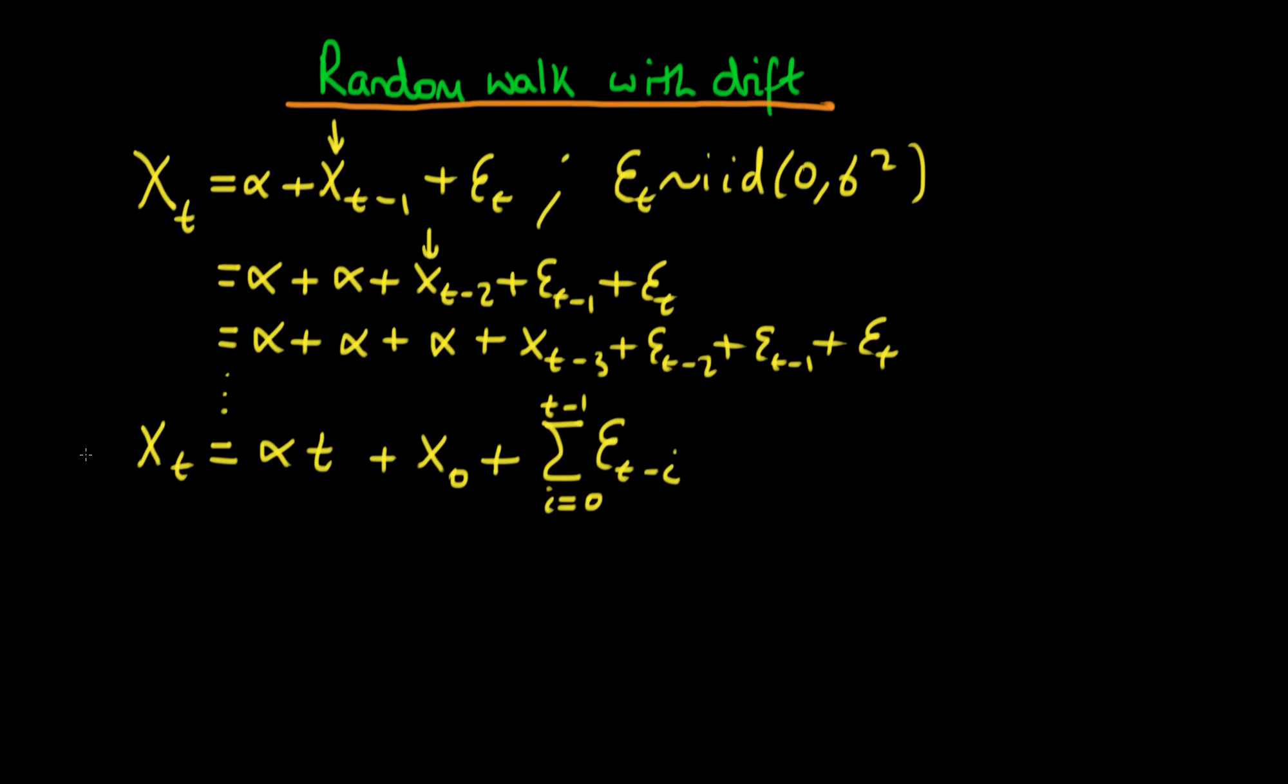Okay so this is a way of decomposing xt into its varied error terms and its initial value of xt which is x0. So what do the mean and the variance of this particular process look like?